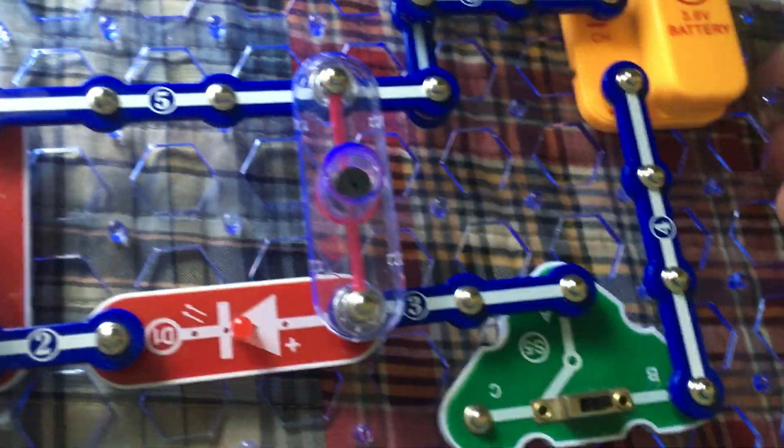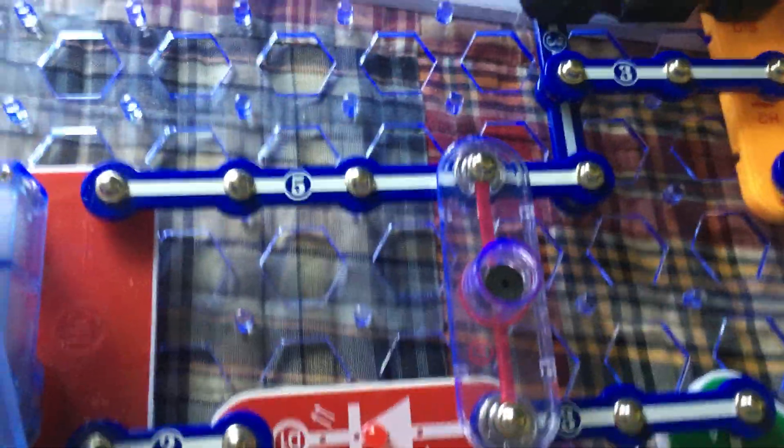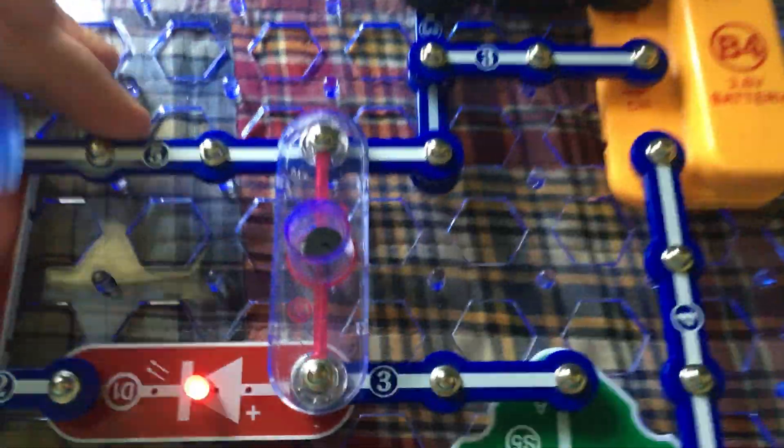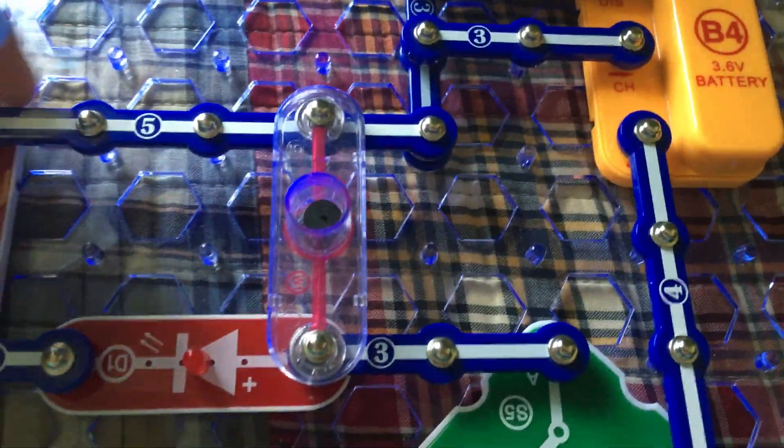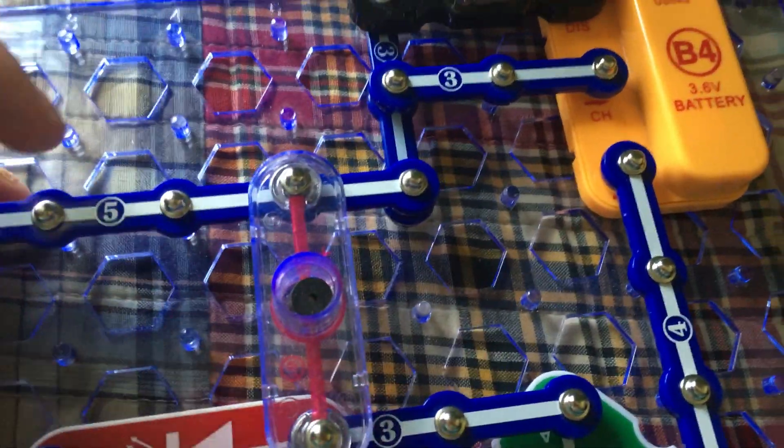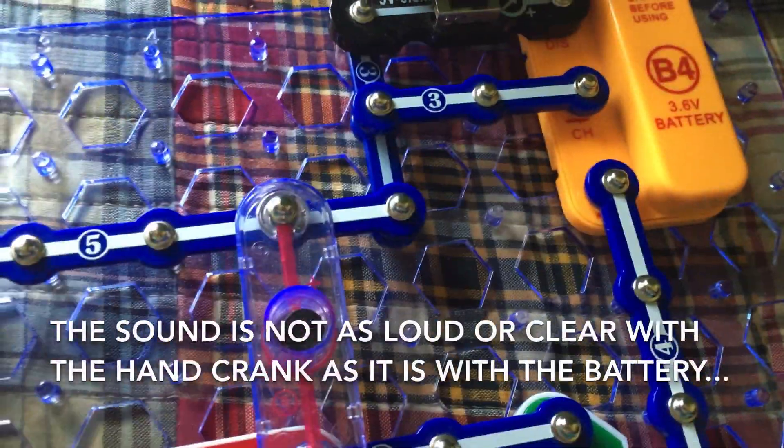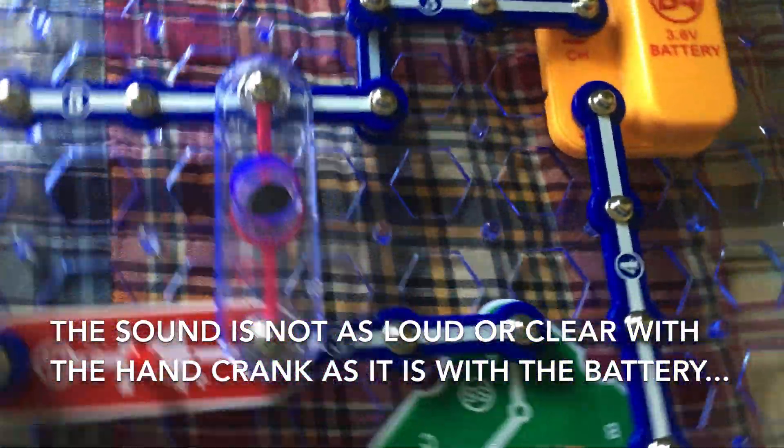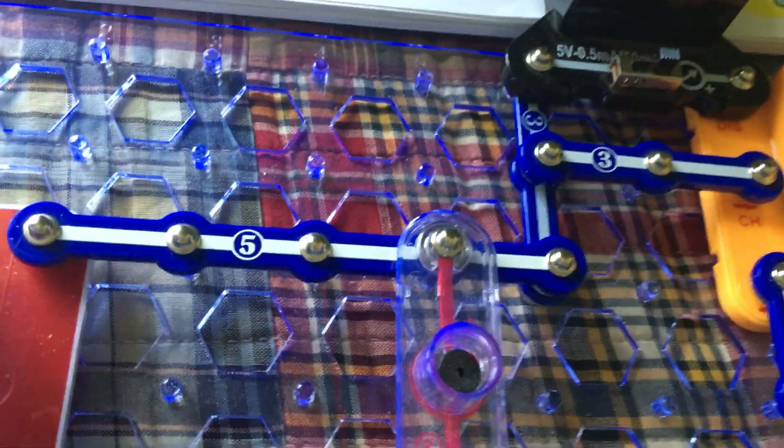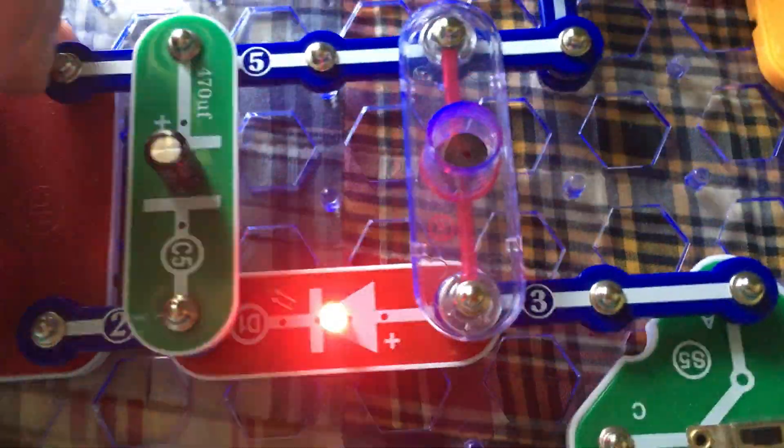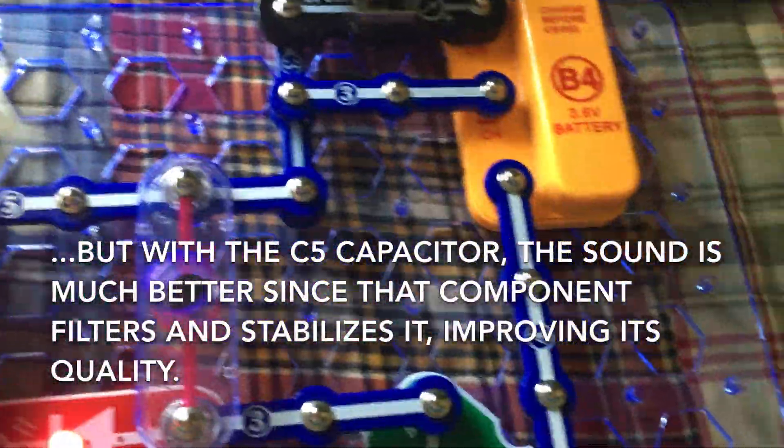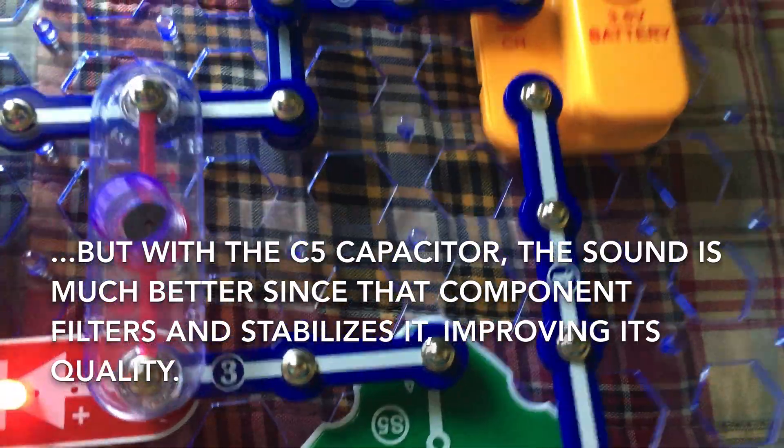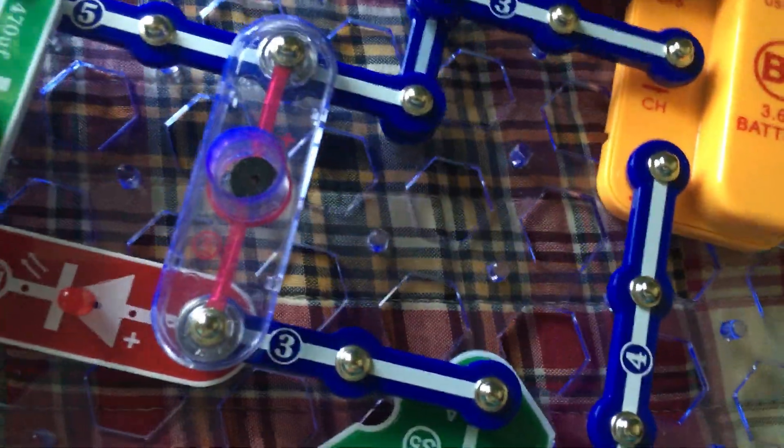Now, when I move the switch back to the C position, turning the hand crank will power not only the horn, but the red LED as well. But, the sound is not as loud or clear as with the battery. However, when we add the C5 capacitor over here and turn the hand crank, the sound will be louder and clearer, just like the battery, because the capacitor filters the electricity so it is more stable.